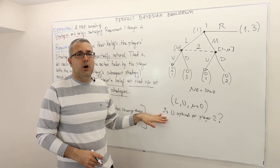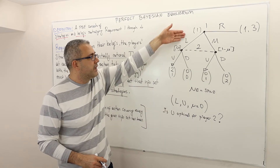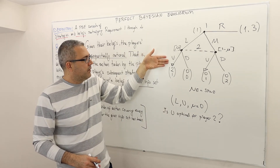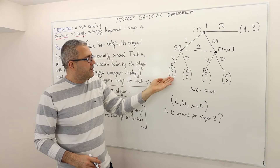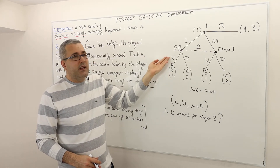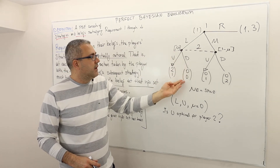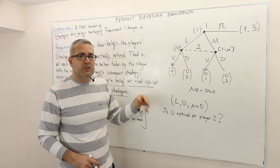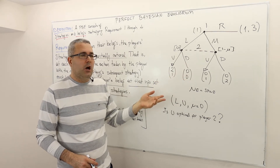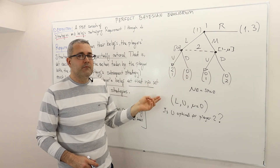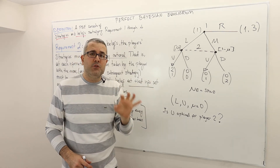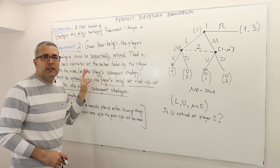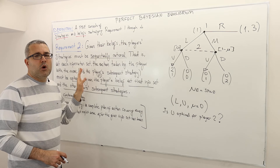Some of you will say yes, it is still optimal because player one is playing left, player two is playing U and getting one, and if she had played D she would get zero — so one is higher than zero, therefore it is optimal for her to play U. If that was your thinking, you are misapplying requirement two.